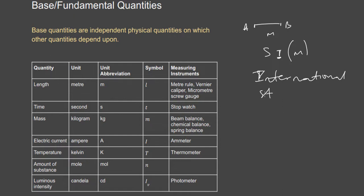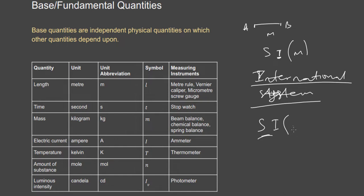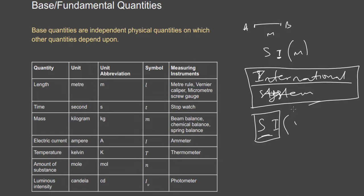The original form of SI comes from the French — it starts with 'système,' which is why S comes before I. The symbol for length is the small letter L. To measure length, you can use a meter rule, a Vernier caliper, or a micrometer screw gauge. I'm going to explain how to read those instruments.